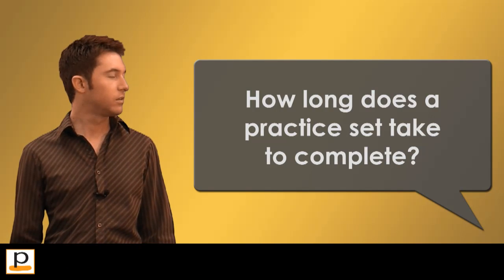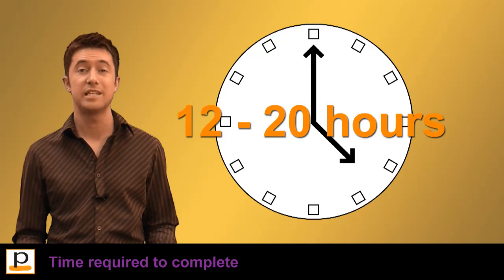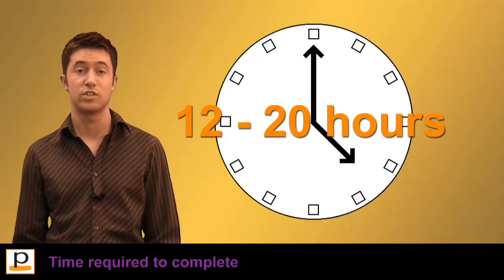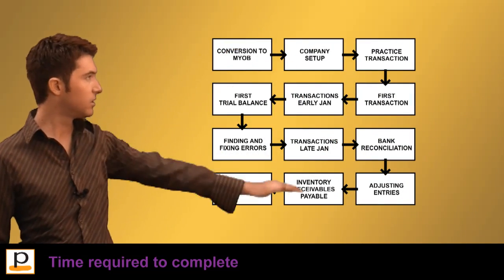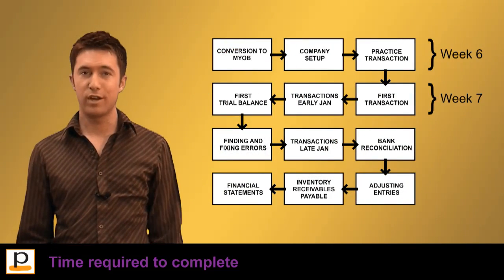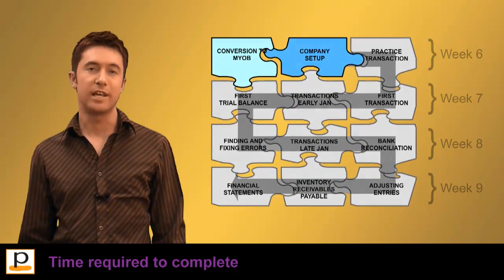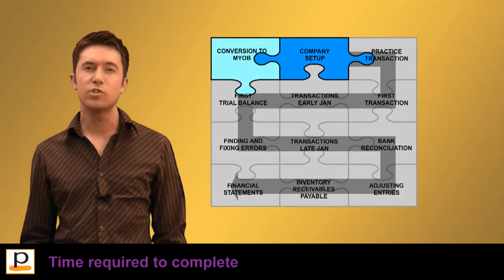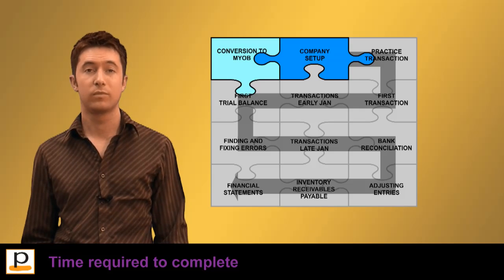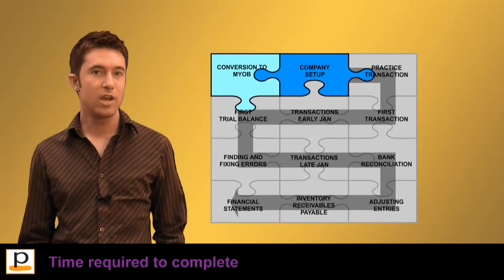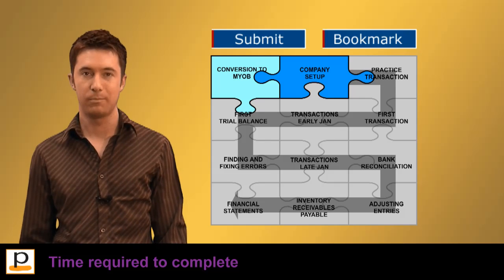The practice set can take between 12 and 20 hours for students to finish. It's completed across a number of pages, generally over a period of weeks throughout the semester. A navigation map is provided on each page so that students know where they're up to and how many study hours are likely to remain. After completing a page, students can bookmark their current position so that they can return to it at a later time.